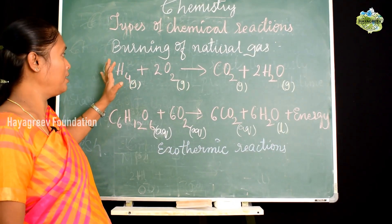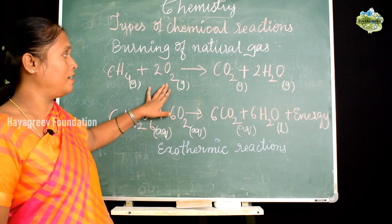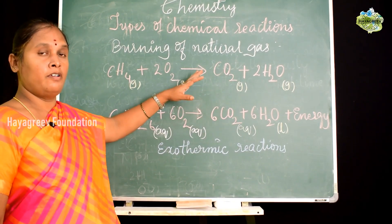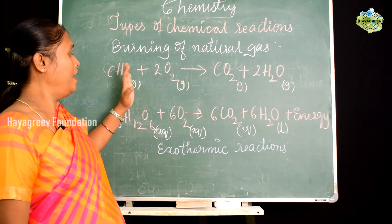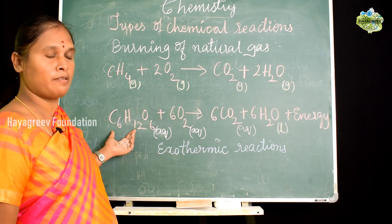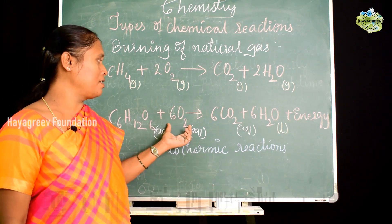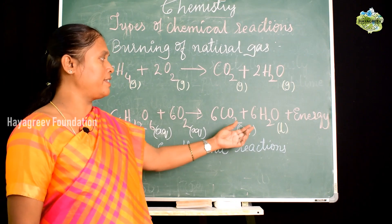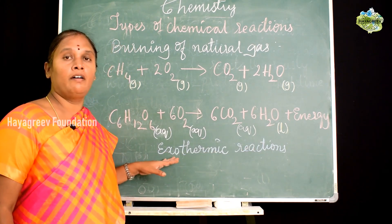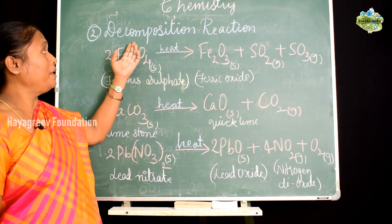Learning more examples of exothermic reactions: burning of natural gas — when methane burns in the presence of oxygen, we have formation of carbon dioxide plus water, and heat energy is also liberated. All burning reactions liberate heat, hence they are considered exothermic reactions. Another classical example is respiration, wherein glucose C6H12O6 combines with oxygen and breaks down to release carbon dioxide, water, and energy.